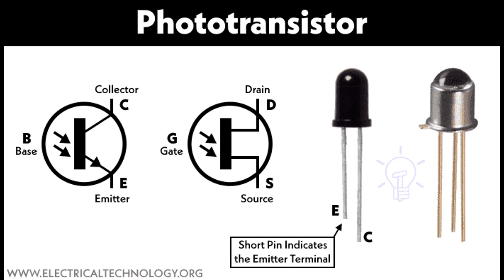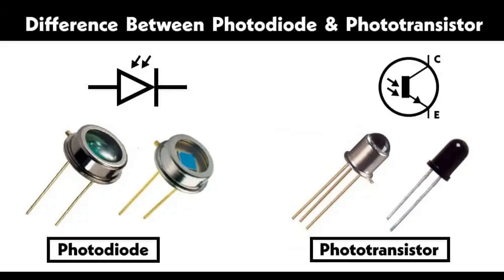PNP phototransistors comprise a P-type emitter, an N-type base, and a P-type collector. Operation is similar to NPN phototransistors, but the majority carriers are holes. When light strikes, electron-hole pairs are generated, with holes moving to the collector and electrons moving to the base. PNP types are less common than NPN phototransistors, used in specific applications where the circuit design favors PNP configurations.